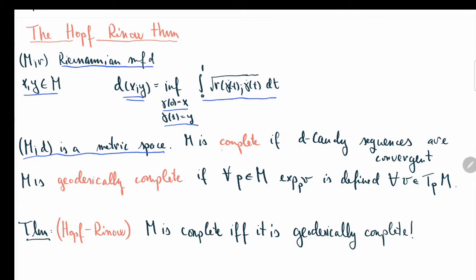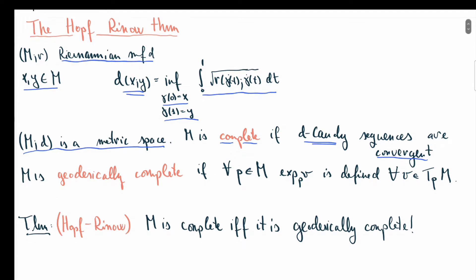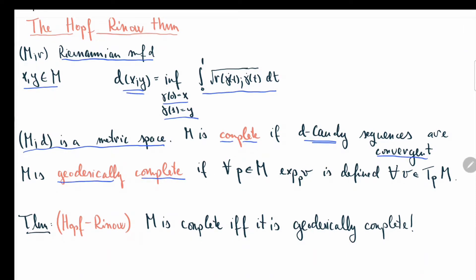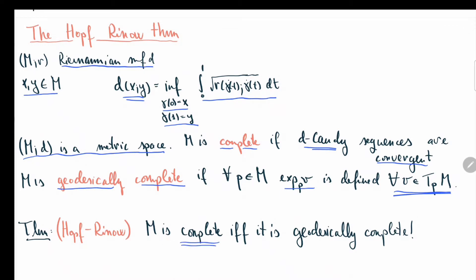We say that the manifold M is complete with the Riemannian structure if every d-Cauchy sequence is convergent — the notion from basic metric topology. On the other hand, we say that M is geodesically complete if for every p, the exponential map exp_p(v) is defined for every tangent vector emanating from p. So seemingly we're dealing with two completely different notions of completeness. But the Hopf-Rinow theorem says that M is metrically complete if and only if it is geodesically complete — quite a surprising result.